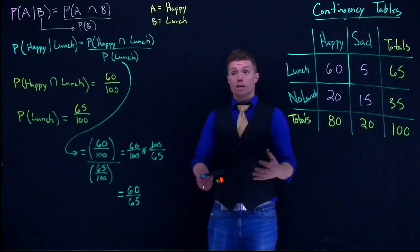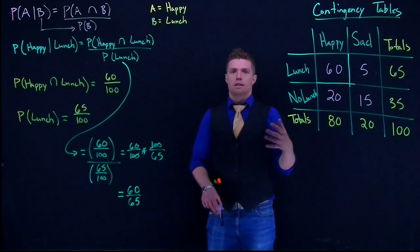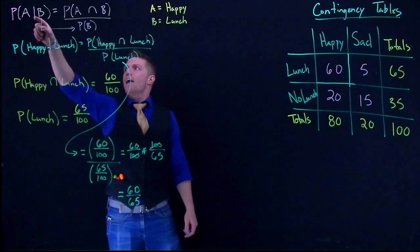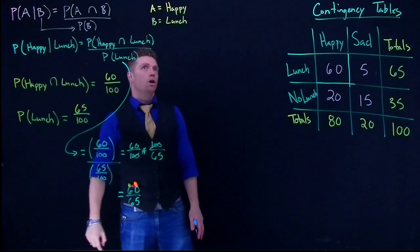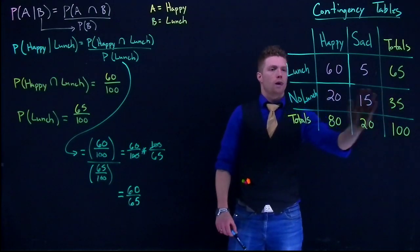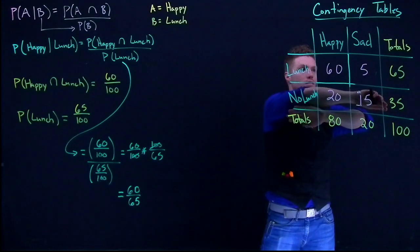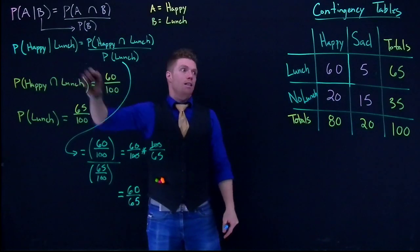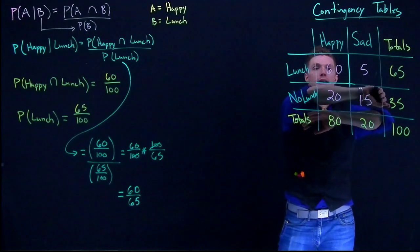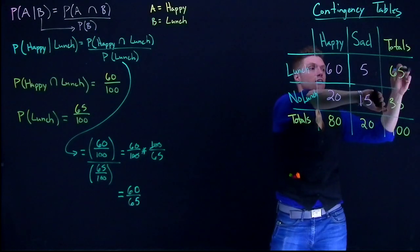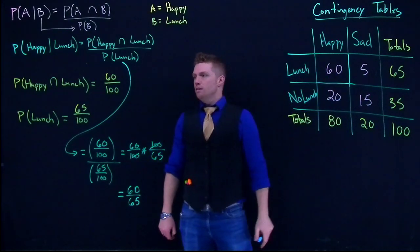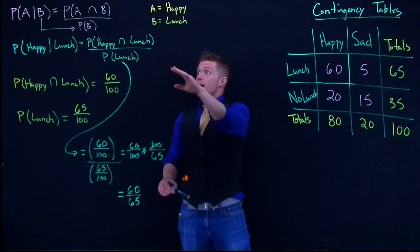Given that somebody has eaten lunch, the probability that they are happy is 60 out of 65. There's another way to think about this using the contingency table. Since we know that our people ate lunch, we can subset our data and ignore the no-lunch column. Now, what's the probability that somebody is happy? There are 60 out of the 65 people who ate lunch — which gets us right back to the same answer.